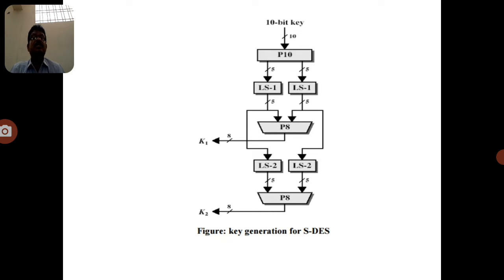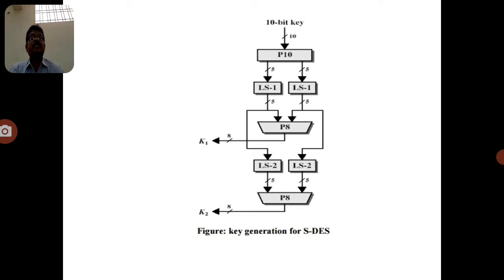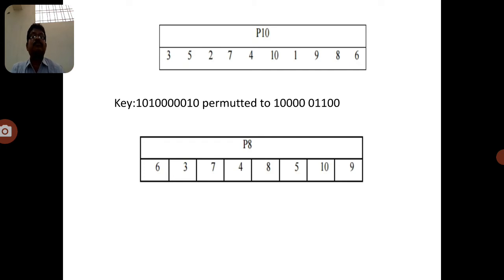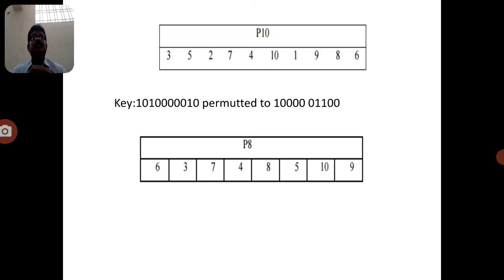Here, an 8-bit plain text is used, so we compare it with the key of the same 8-bit size. However, the SDES key generation algorithm takes a 10-bit key and applies a permutation called P10. The P10 permutation rearranges that particular data — the 10 positions in the given key are reordered.